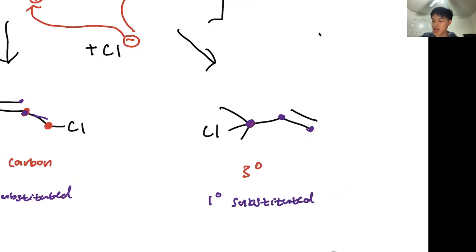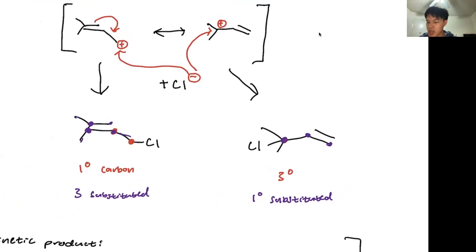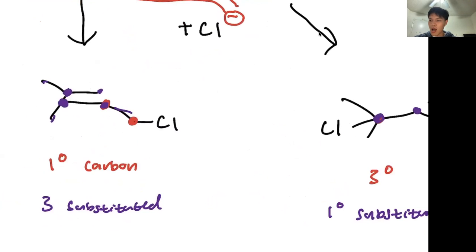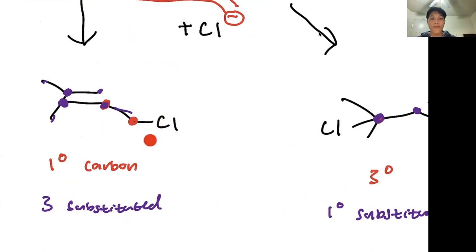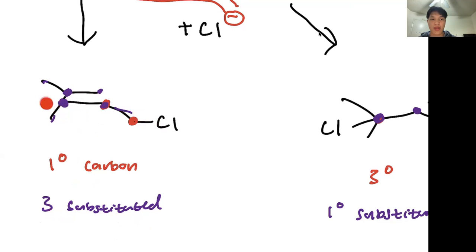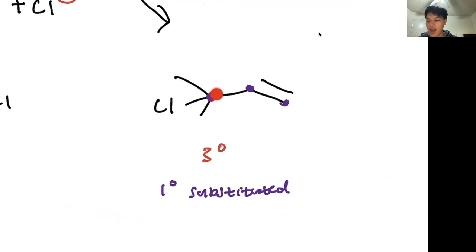So we have a few cases here. In one case, our chlorine group is not as stable, but our alkene double bond is very stable — it's substituted by three groups attached to it. In the other case, we have a very stable chlorine attachment, but an unstable alkene. Which one is going to occur first?